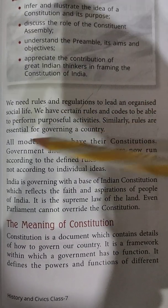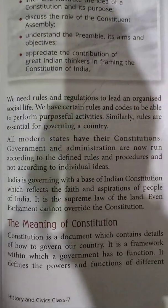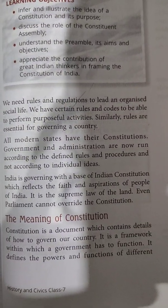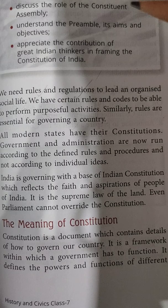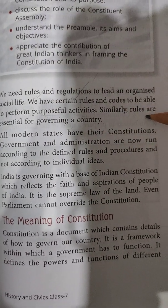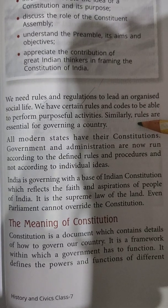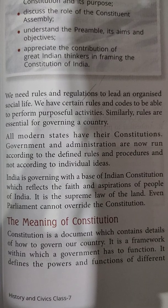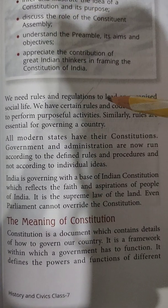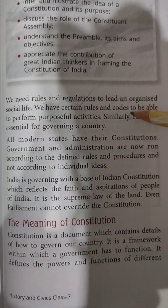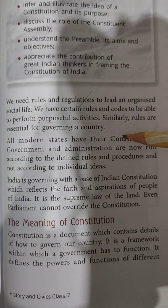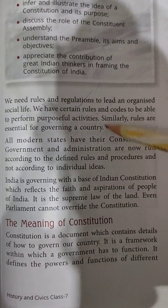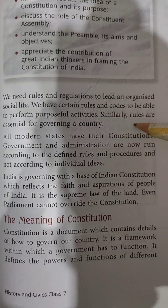Similarly, rules are essential for governing a country also. There have to be certain rules when you govern your country. For example, there are traffic rules — your red light, yellow light and green light. If these lights or traffic police are not there, there may be the possibility of accidents. So for governing a country in a smooth manner, you have certain rules.